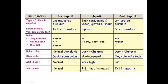Stool color: it is dark brown in prehepatic jaundice. It is normal in hepatic jaundice, or clay-colored stools will appear in posthepatic or obstructive jaundice due to the absence of stercobilin. Liver enzymes ALT and AST will be normal in prehepatic jaundice because there is no abnormality in the liver. In hepatic jaundice, there will be remarkably higher liver enzymes. In posthepatic jaundice, ALT and AST will be raised. ALP levels are normal in prehepatic jaundice, two to three times increased in hepatic jaundice, but remarkably high in obstructive or posthepatic jaundice.